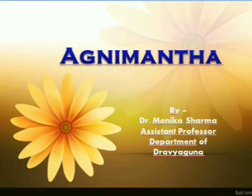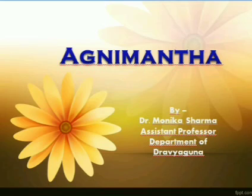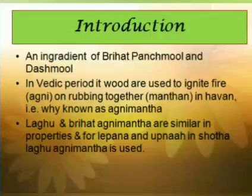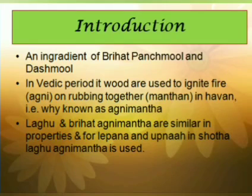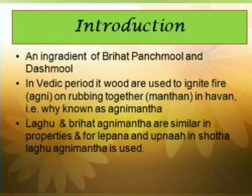Dear students, I extend a very warm welcome to all of you. In this series of e-learning, we will continue the study of Vrat Panchmool dravyas. The topic for today's discussion is the plant Agnimant. The plant derived its name Agnimant by the belief that when the woods or the dried branches of the tree are rubbed together, they produce fire or ignite. The process of rubbing two things together is known as Manthan and the term Agni is used for fire, hence the plant gets its name Agnimant.